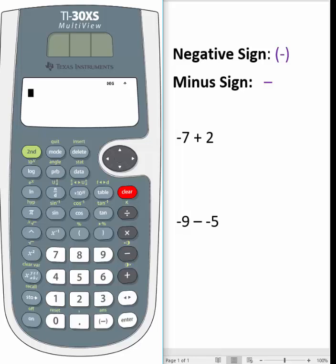Once again, type it in from left to right, a negative 9 minus a negative 5. And we'll select enter when we're finished. The answer is once again to the right side of the problem on the screen.